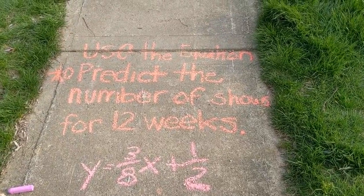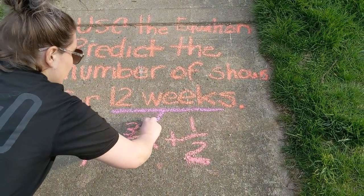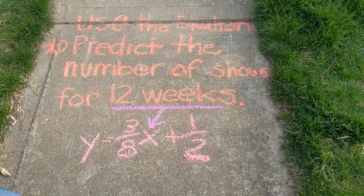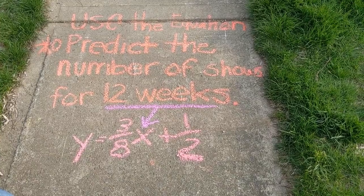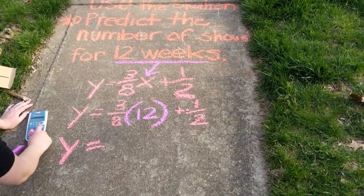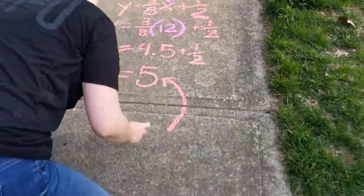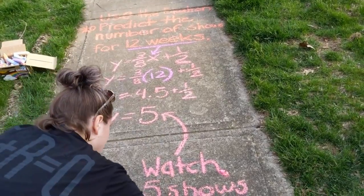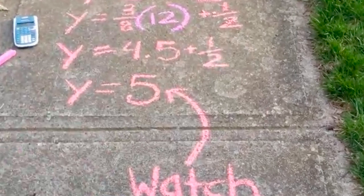So here, if we want to predict for 12 weeks — since our number of weeks was on the x-axis, we're going to plug that in for x. I'm going to give you a minute to plug that in and see what you come up with. How many shows would you predict you would binge-watch in a 12-week quarantine? What you can see here is that if we have 12 weeks of quarantine, you would expect to have binge-watched 5 different shows.